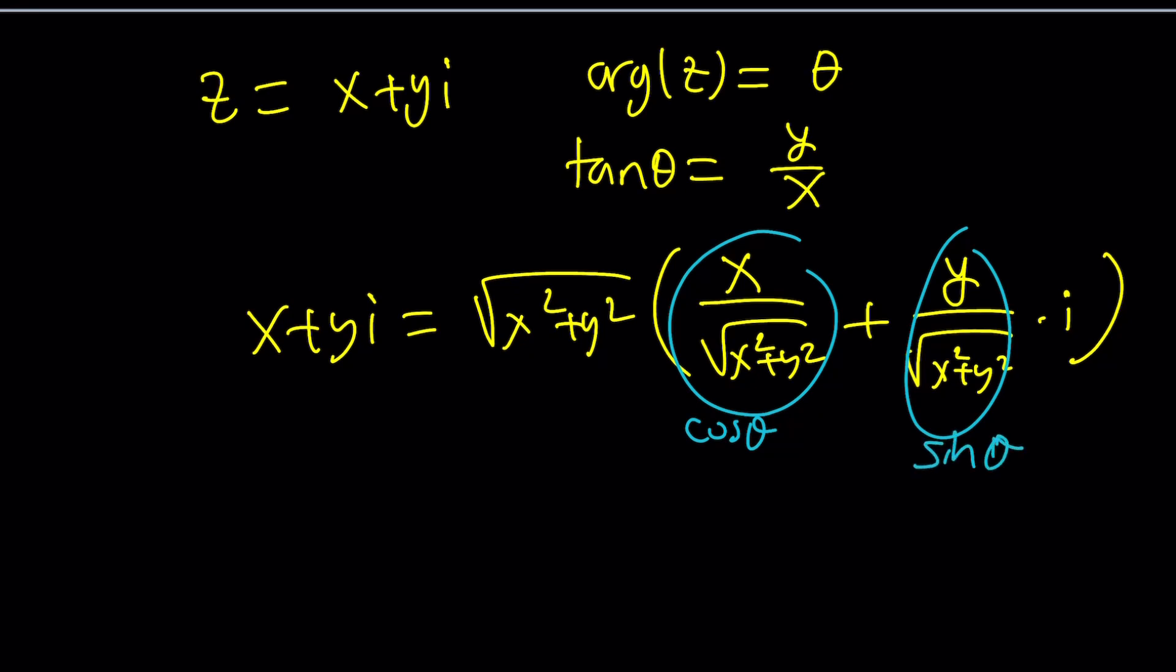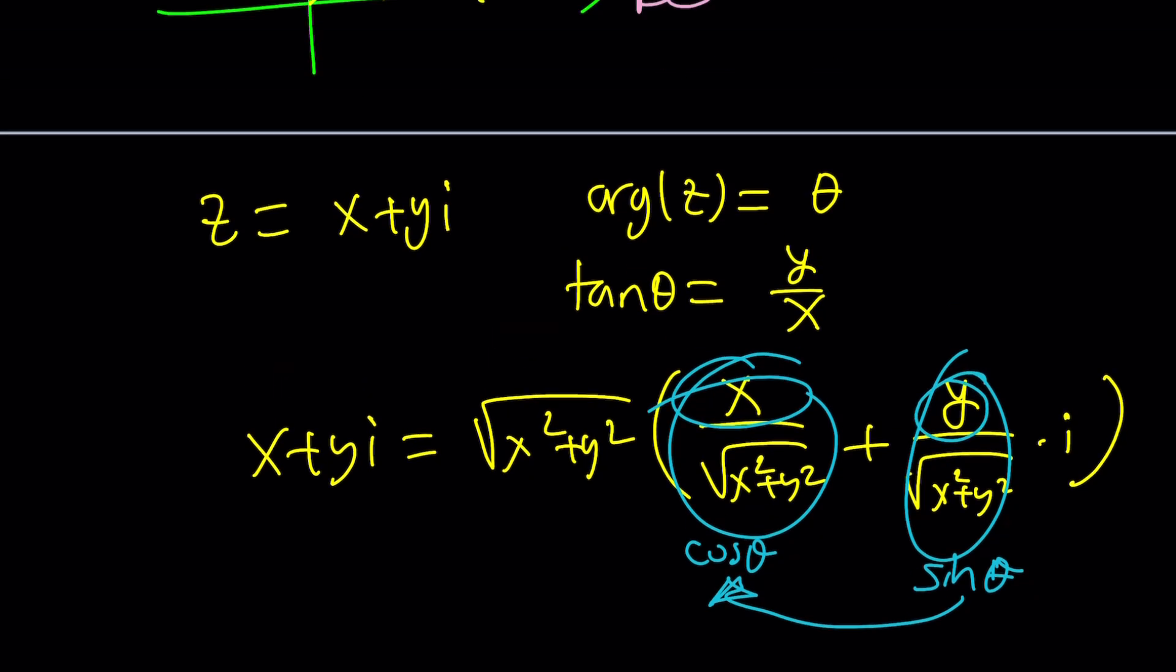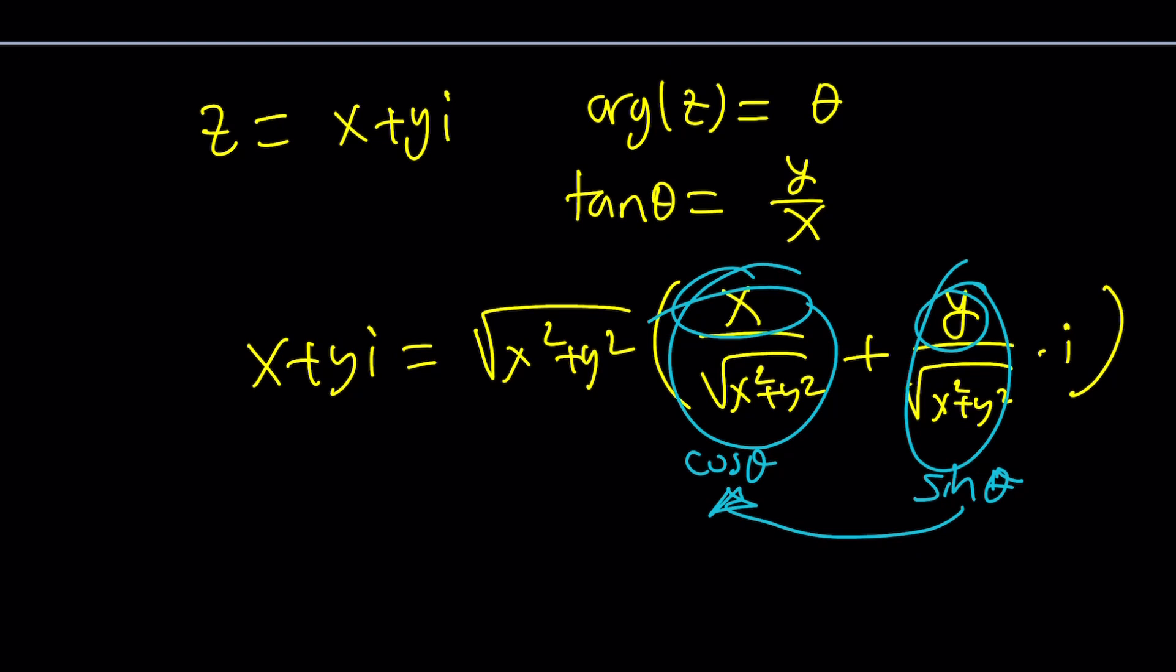And then these just happen to be the cosine of θ, and this is the sine of θ from a right triangle. And when you divide the sine by cosine, you get the tangent, which is y over x. Make sense? Anyways, I kind of gave you a quick summary, but go ahead and check out the details in the lecture videos.